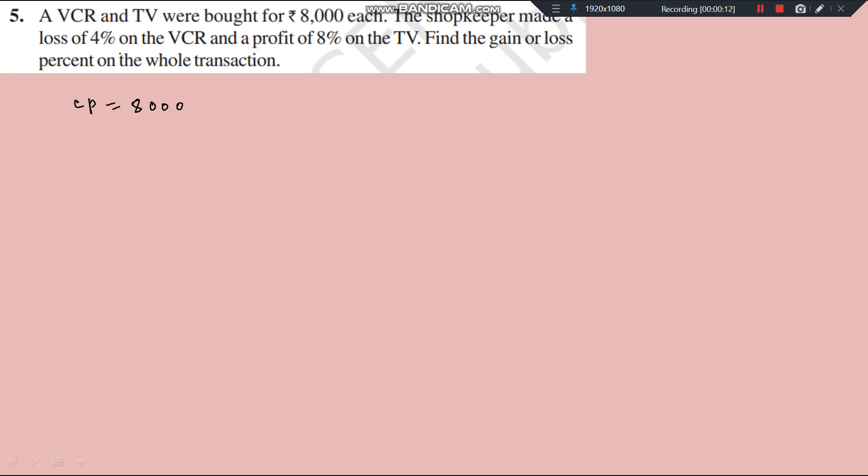The shopkeeper made a loss of 4% on the VCR. So VCR, CP this. Now loss is, made a loss of 4% on the VCR. So, if Rs. 100 CP then SP is equal to 96 because 4% loss.